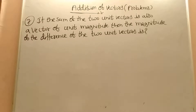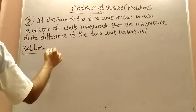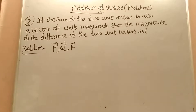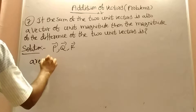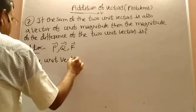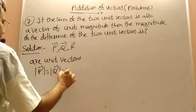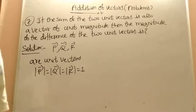If the sum of two unit vectors is also a vector of unit magnitude, then find the magnitude of the difference of the two unit vectors. I am taking three vectors: P vector, Q vector, R vector. All are unit vectors, meaning their magnitudes mod P equals mod Q equals mod R equals 1. A vector whose magnitude is 1 is called a unit vector.